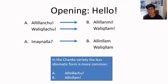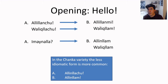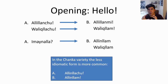When we want to say hello in Quechua, there are two ways to do this. The first one uses idiomatic expressions, which means we're going to have to learn a fixed chunk — a construction that doesn't change much or is used in a way that is not necessarily regular. The idiomatic one is Alilianchu, whose answer always is Aliliangmi. And Walegliachu, which is always tied to Walegliam.